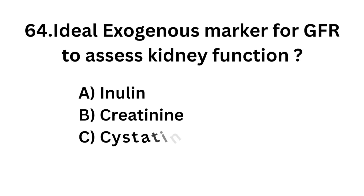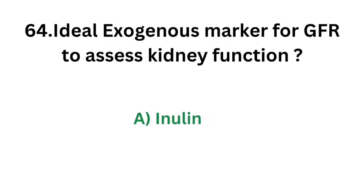Question number 64. What is the ideal exogenous marker for GFR to assess kidney function? Option A - Inulin; Option B - Creatinine; Option C - Cystatin C; Option D - Urea. The correct answer is Option A, Inulin. The ideal exogenous marker for GFR to assess kidney function is inulin.